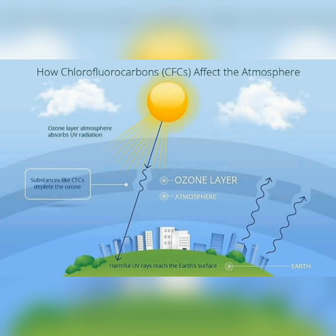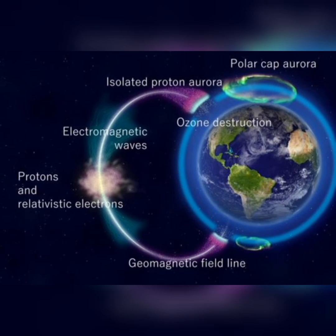CFCs are mostly found in refrigerators, aerosols, and plastic products. When CFCs are exposed to ultraviolet rays in the atmosphere, they break down into substances that include chlorine. The chlorine reacts with the oxygen atoms in ozone and rips apart the ozone molecule.